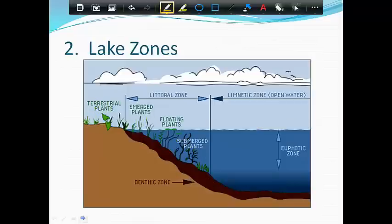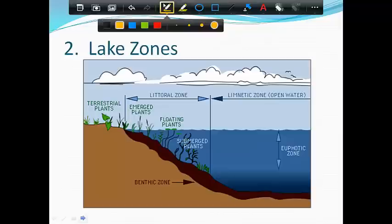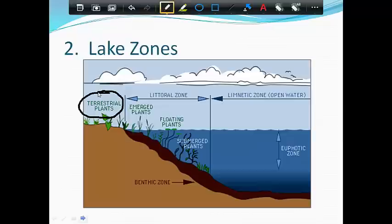So the first thing you want to label is the three different types of plants that we have in lakes. Those plants that are solely out of the water, except of course if it floods, those plants are called terrestrial plants. So they only grow on the land and completely not covered by water. So label those.